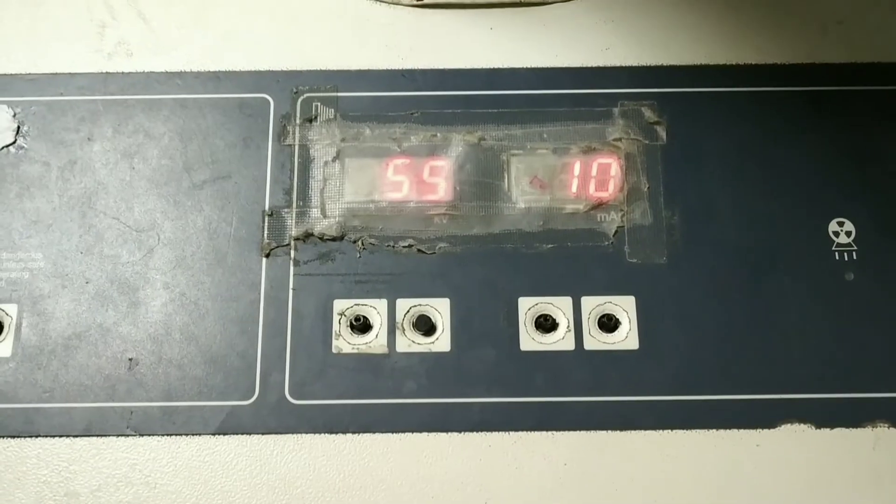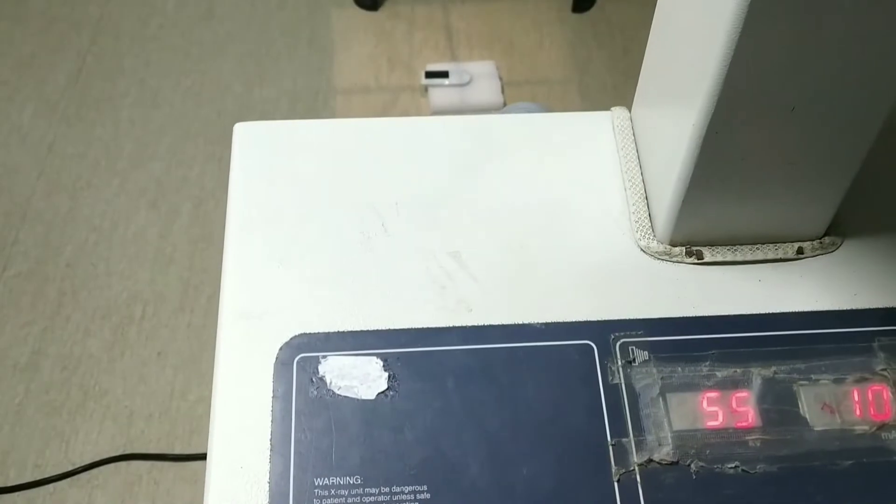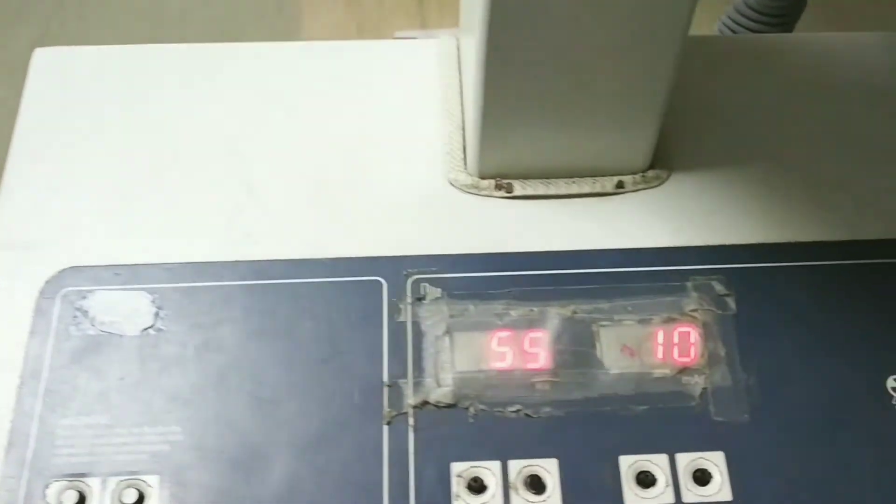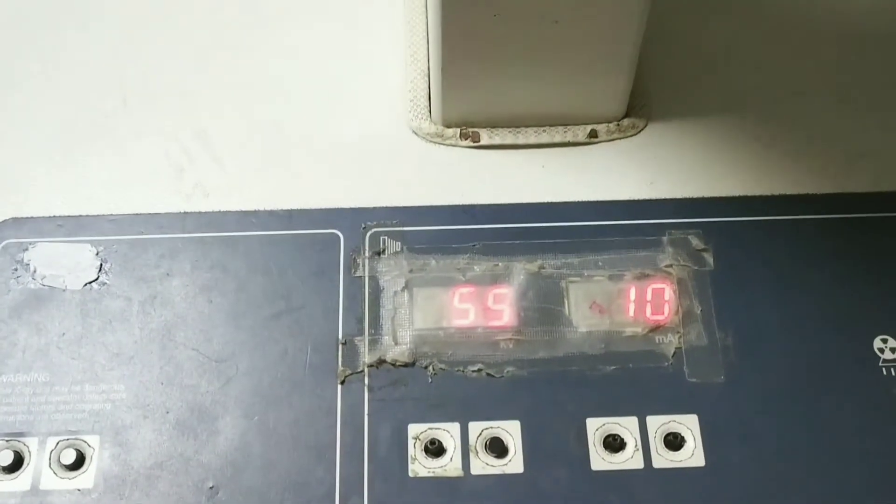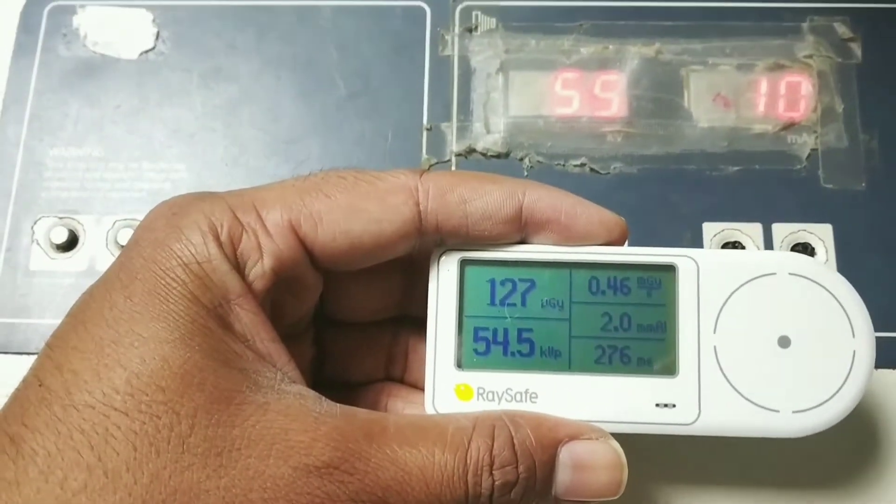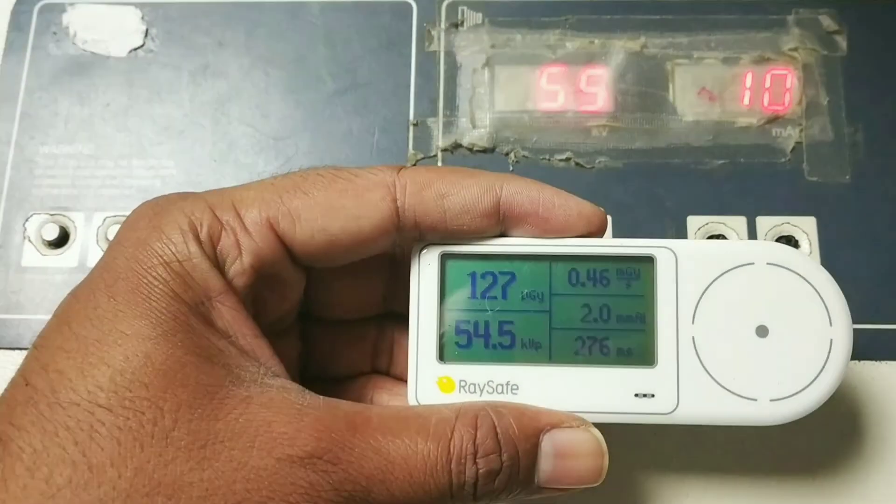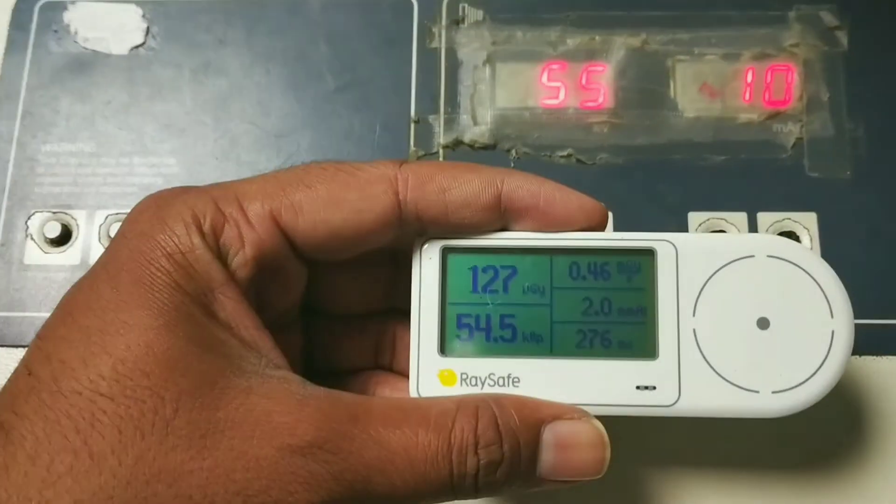Now we will be testing dose with the help of the dosimeter. This is the reading set. Now we will take a shoot. We'll check if there is a variation or not. You can see how the readings are related. With the help of different readings, the error percentage is calculated and it is checked whether it is correct or not.